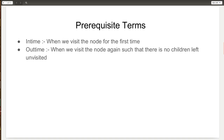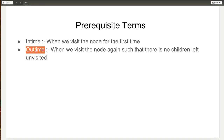The first term is intime, which is defined as the time when we visit the node for the first time. We will start a timer of sorts and then record the time when we visited the node for the first time — this will be denoted as the intime of the node. The second term is the out time, which is defined as the time when we visit the node again such that there are no children left.